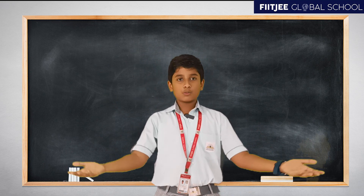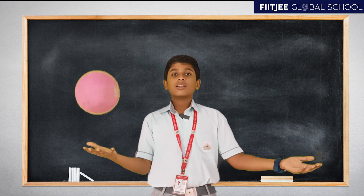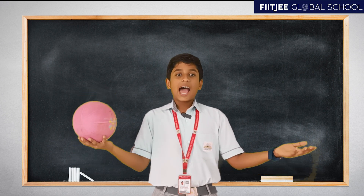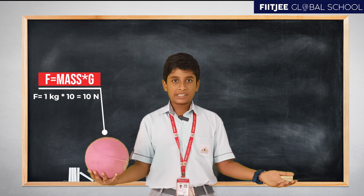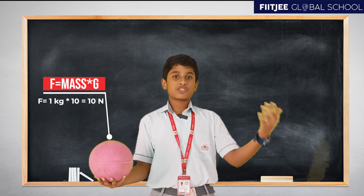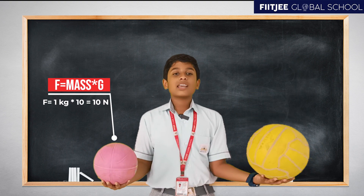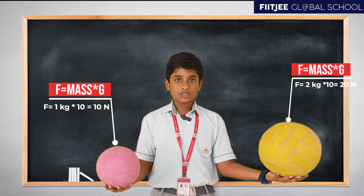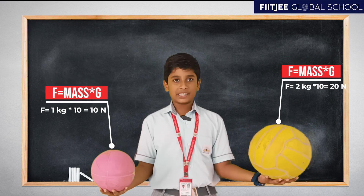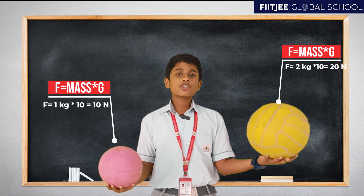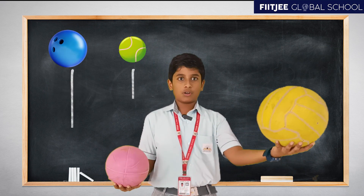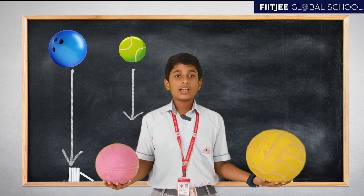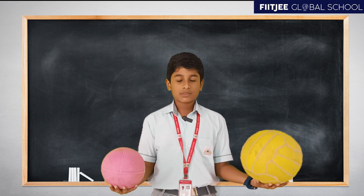Why does this happen? Let's say I have two balls. This one weighs 1 kg, and 10 newtons of force is being exerted on it by gravity. This one weighs 2 kg, and therefore 20 newtons of force is being exerted on it by gravity. So our common sense may tell us that the heavier ball will fall first. However, this is not the case.